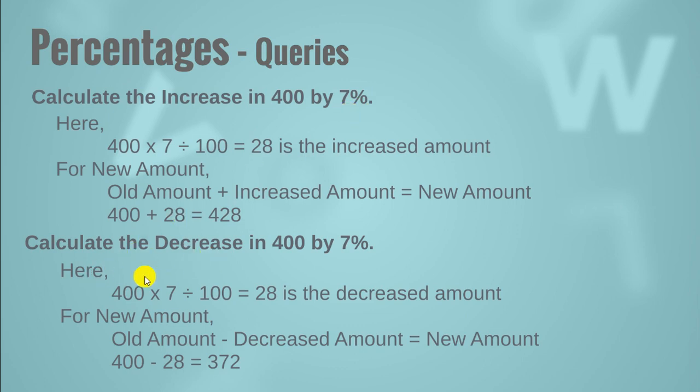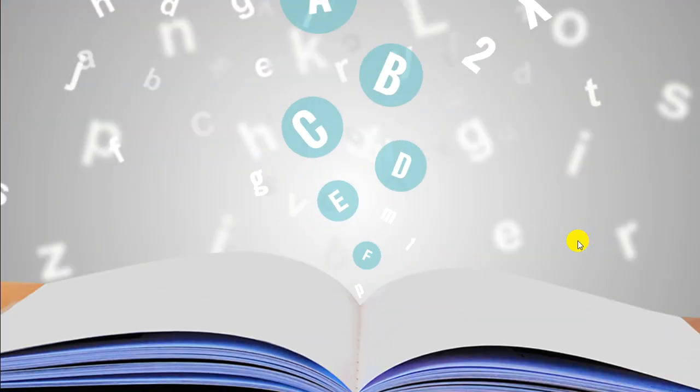Calculate the decrease. This is also simple. Simply you need to find 7% of 400, that is 28, and you need to subtract 28 from 400, that is 372. Simple. We are done with today.